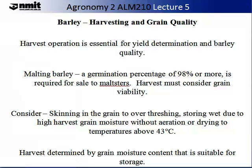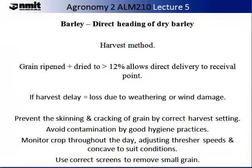Either wet without air or temperatures above 43°C will significantly reduce germination. Harvest is determined by grain moisture content that is suitable for storage. The direct heading of dry barley is one harvest method. It relies upon grain ripened and dried to 12%, allowing delivery to the receivable point without any drying or aeration. If there is a harvest delay, this will result in a loss in crop and quality, possibly due to weathering or wind damage.